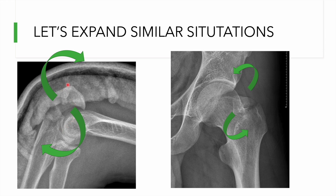Tuberosity fractures, olecranon fractures, and avulsion fractures can all be understood using this principle. In olecranon fractures, the dorsal surface opens up while the volar surface gets tilted toward the fracture side.